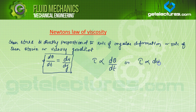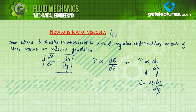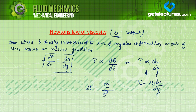And τ is directly proportional to du/dy — this is the secondary statement. From this equation, removing the proportionality sign: τ = μ(du/dy). In Newton's law of viscosity, μ is a constant. When we plot this graphically — τ versus du/dy or dθ/dt — if μ is constant, then μ is the slope of the graph between shear stress and velocity gradient or rate of shear strain.